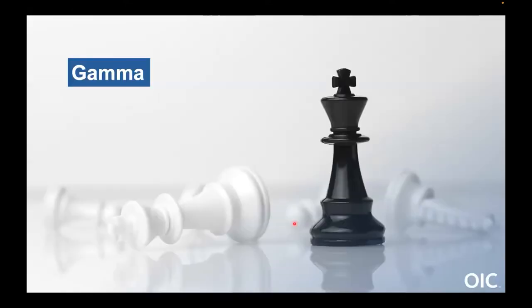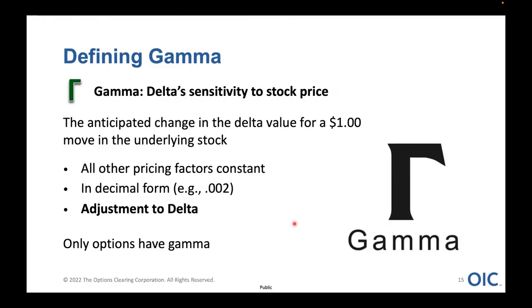Now let's examine gamma. Gamma is your option's sensitivity to your delta sensitivity to a change in stock price — in other words, it's the delta of your delta, or the adjustment to your delta. It tells us how much your option's delta will change with a $1 move in the underlying stock, either up or down. It's always expressed in decimal form, and only options have gamma. One way I like to think about it: gamma is the speed of your delta.